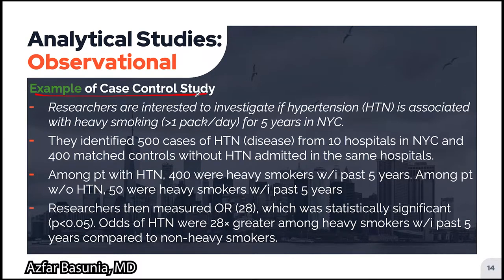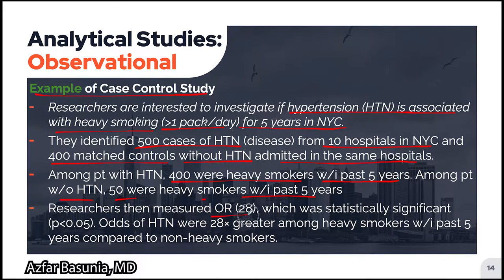Here is an example of a case control study. Researchers investigate if hypertension is associated with heavy smoking (greater than one pack per day for five years) in New York City. They identify 500 cases of hypertension from 10 hospitals and 400 matched controls without hypertension from the same hospitals. Among patients with hypertension, 400 were exposed to heavy smoking within the past five years, whereas among patients without hypertension, 50 were exposed. The odds ratio was around 28, which was statistically significant, concluding that the odds of hypertension were 28 times greater among heavy smokers. We will learn how to calculate odds ratio in a future video.